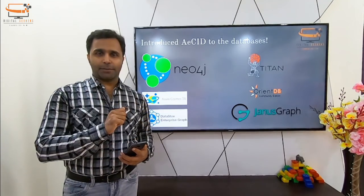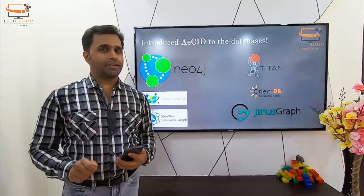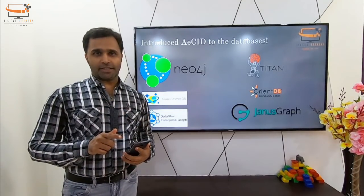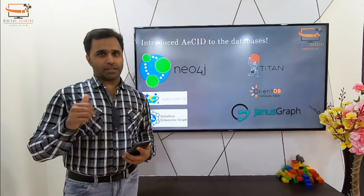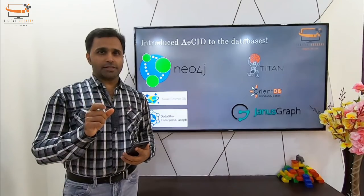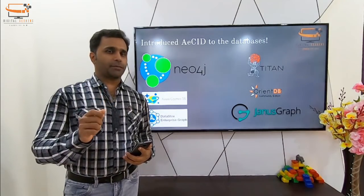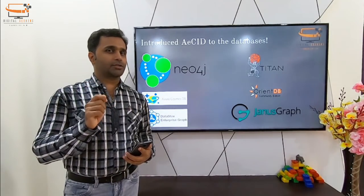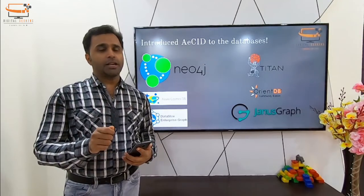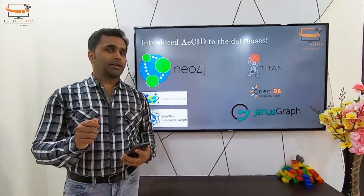These graph databases have introduced AECID to the NoSQL world: atomicity, eventual consistency, isolation, and durability. Eventual consistency means that over a period of time the data is going to become consistent — this is a promise given by the database that the data will be consistent.